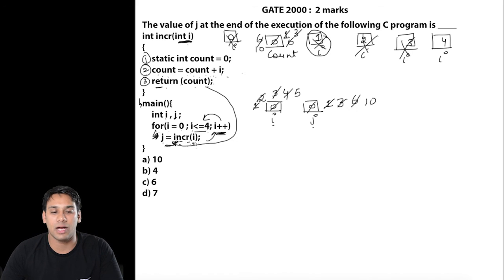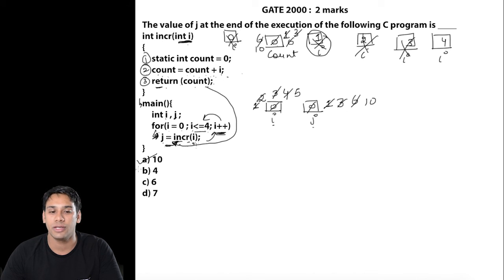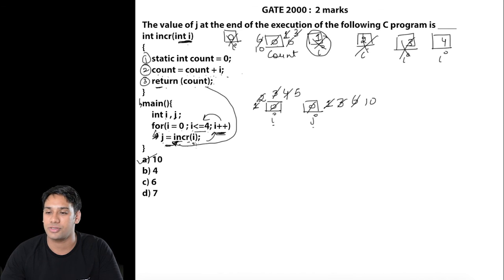After the for loop completes its execution, the value stored in variable j is 10. Therefore option A is correct. It is a very simple question based on static variables. Now let us see more questions.